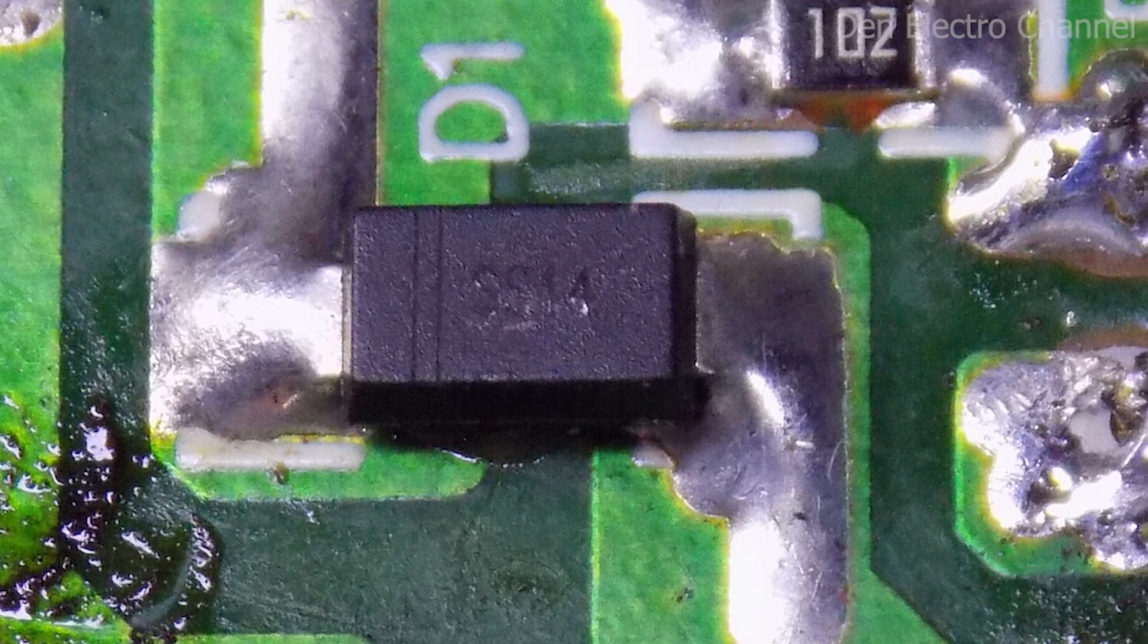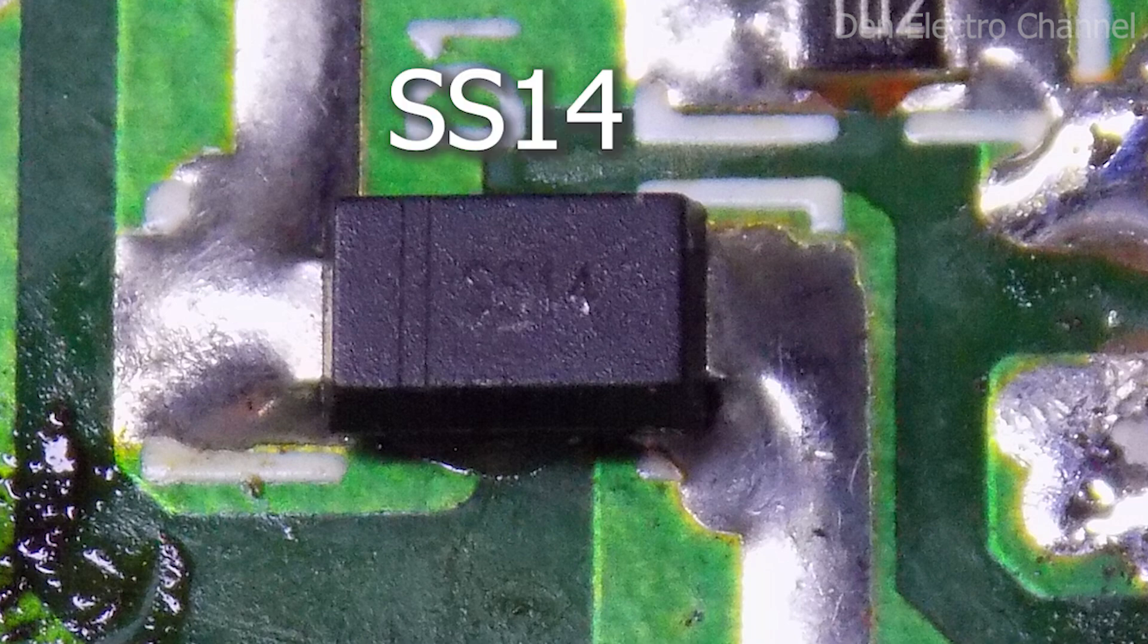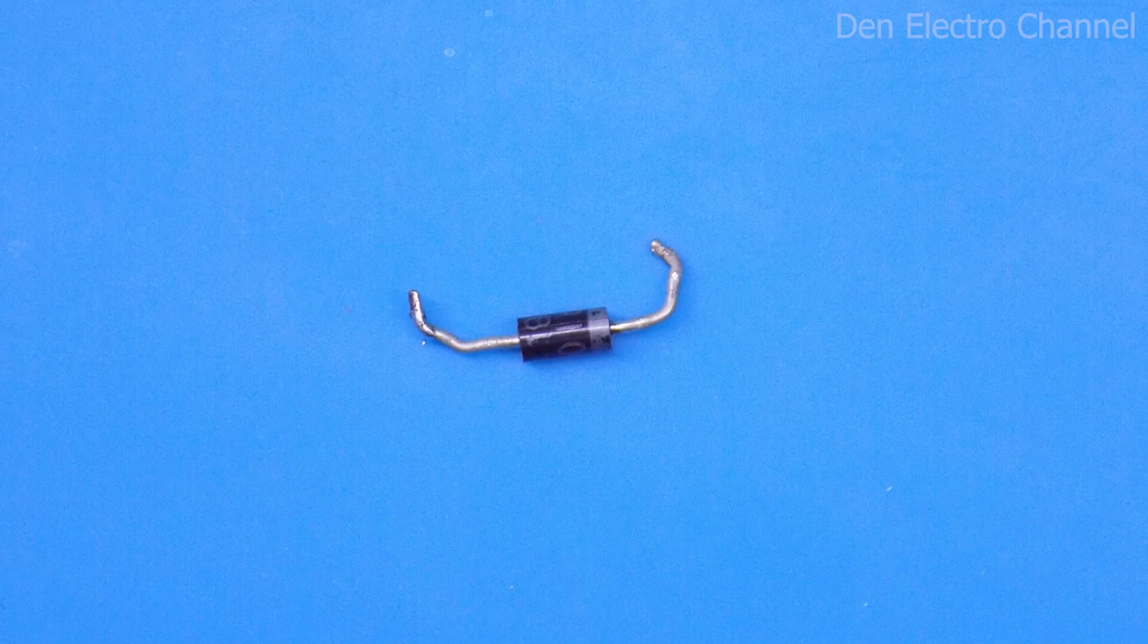I also recommend paying attention to the rectifier diode, which is located after the secondary winding. Is it suitable for you in terms of voltage and flow? I have a diode here labeled SS 14. This is a 1 amp 40 volt Schottky diode. After rewinding the transformer, this diode worked for me for literally only two minutes. And then it was without load, at idle. Then the power supply went out. I thought it had already burned out. But then when I started checking everything, it turned out that the diode had broken through and there was a short circuit on it. In general, I had to replace the diode.